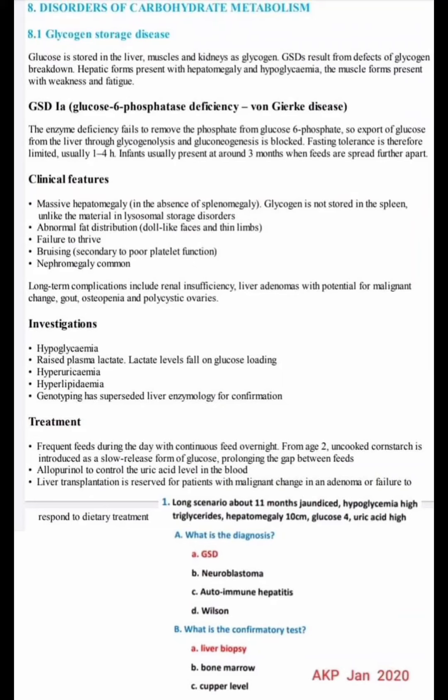In this video, I am discussing glycogen storage disease, specially glycogen storage disease 1a. Glycogen storage disease is a disorder of carbohydrate metabolism. Glucose is stored in the liver, muscles, and kidneys as glycogen. Glycogen storage disease results from defects of glycogen breakdown. Hepatic forms present with hepatomegaly and hypoglycemia; muscle forms present with weakness and fatigue.